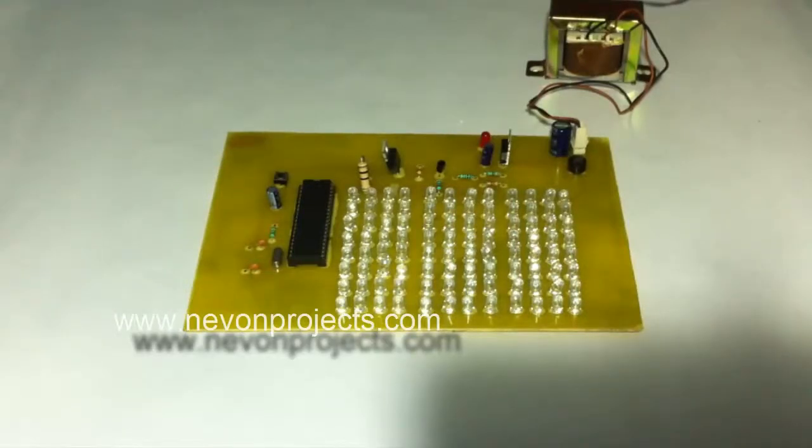Hi, this is a demonstration of the auto intensity control of street light project. Here we use an 805 family microcontroller and these are a set of LEDs arranged to demonstrate as street lights. In situations where street lights keep glowing throughout the night and day, in order to reduce the intensity for enhanced power saving, we use the concept of PWM, that is pulse width modulation.